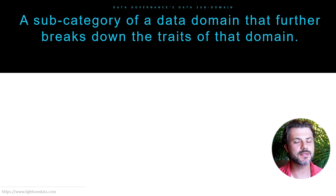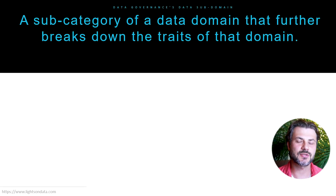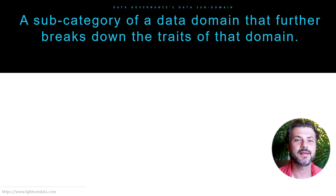Typically, each data domain will have anywhere between 3 to 10 data subdomains. What is a data subdomain? It's simply a way to divide that data domain even further into other categories.